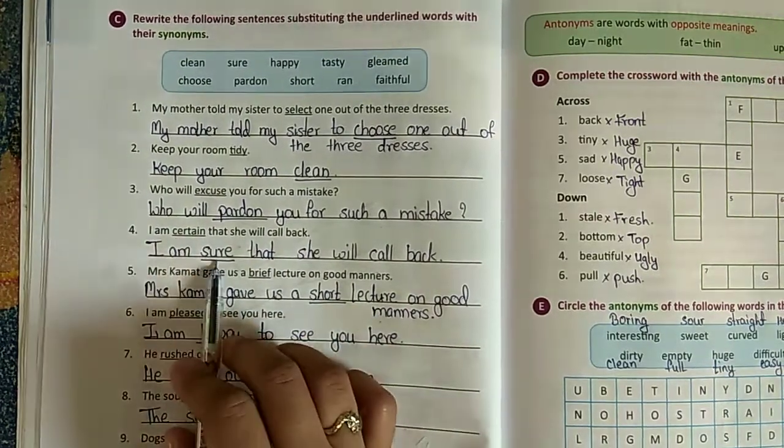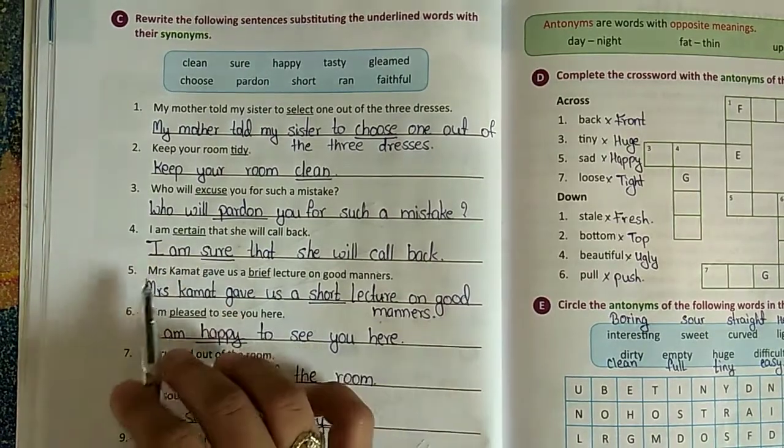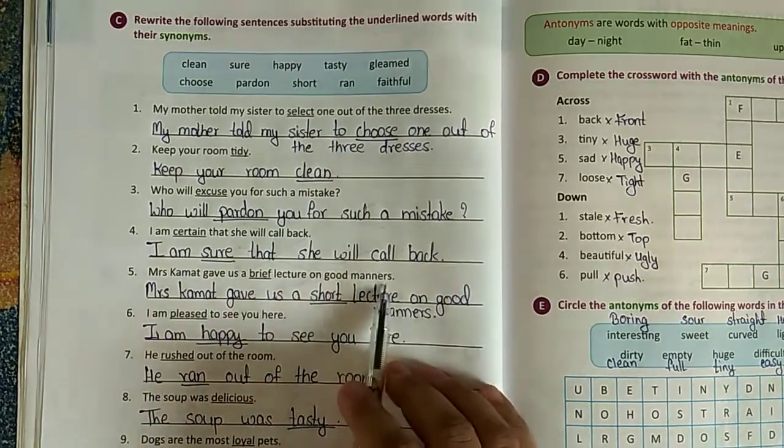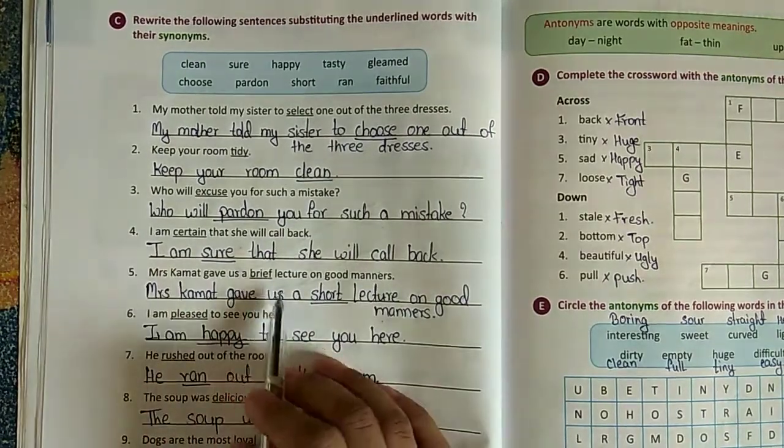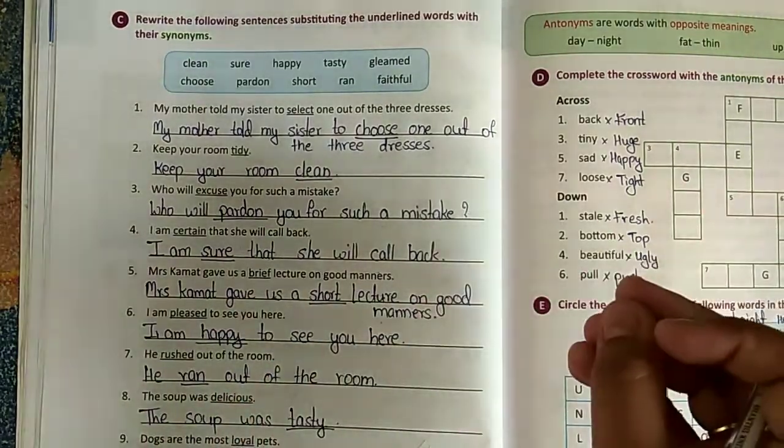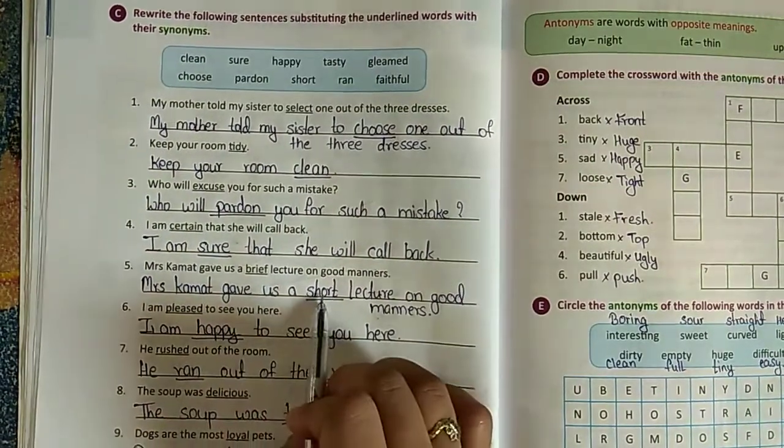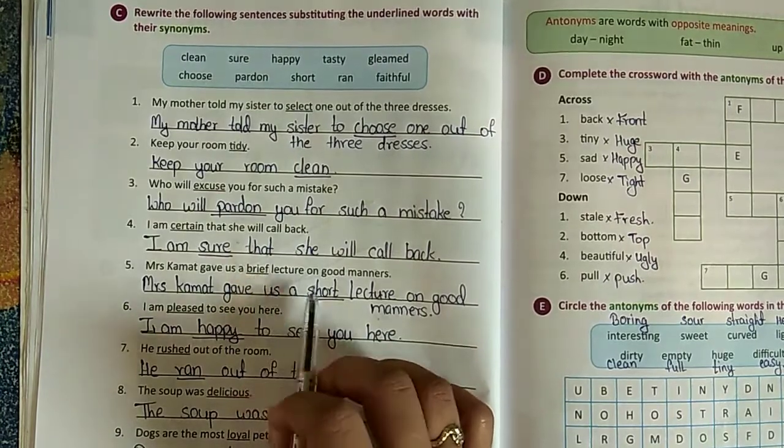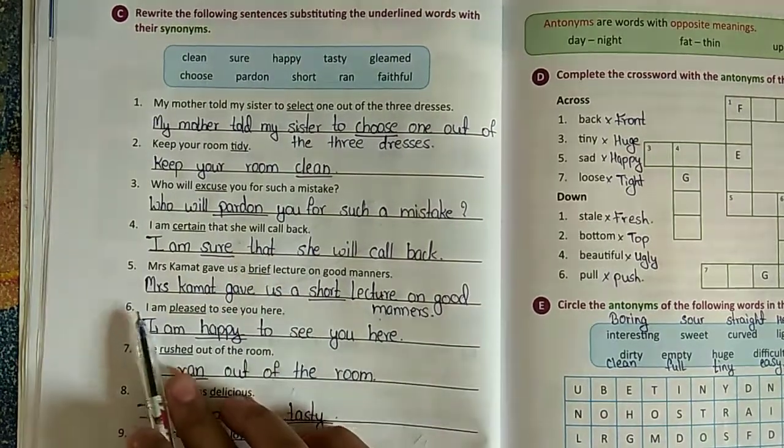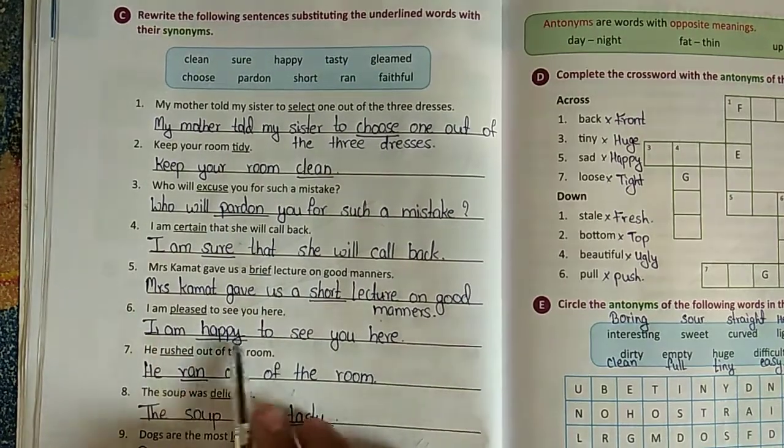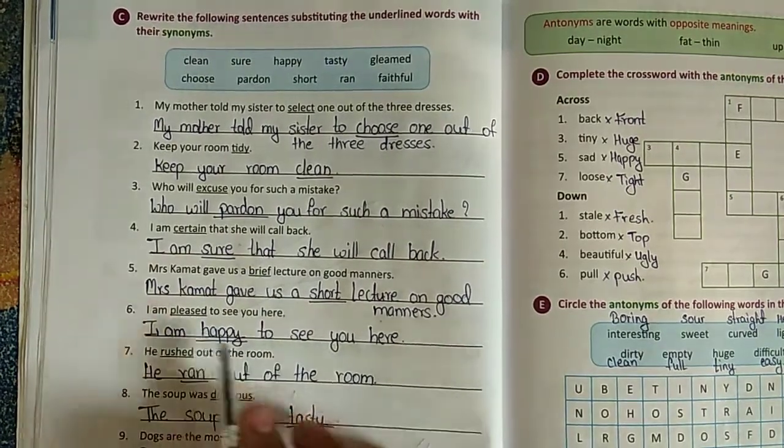I am certain that she will call back - I am sure. Certain will become sure. Miss, Mrs. Kamat gave us a brief lecture on good manners. Brief means ek halka sa lecture about good manners. Mrs. Kamat gave us a short lecture. Synonym of brief is short. Sixth: I am pleased to see you here - I am happy. Synonym for pleased is happy.